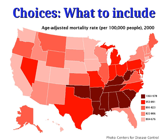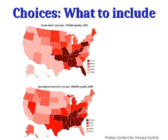In the age-adjusted map, we've adjusted the numbers to account for the fact that old people are more likely to die than younger people. If you have a state with a lot of old people and not many young people, of course there are going to be more deaths there. So if we adjust for differences in the age structure of the population, we get a somewhat different looking map. If you look at Pennsylvania, it has one of the higher crude death rates but is in the middle on the age-adjusted mortality rate. Texas has one of the lowest crude death rates but is somewhere in the middle on age-adjusted rates.